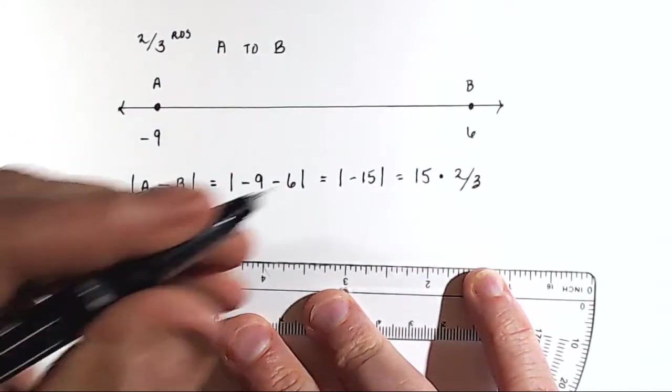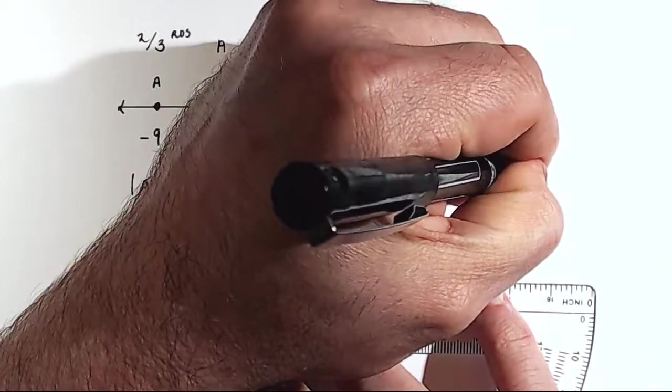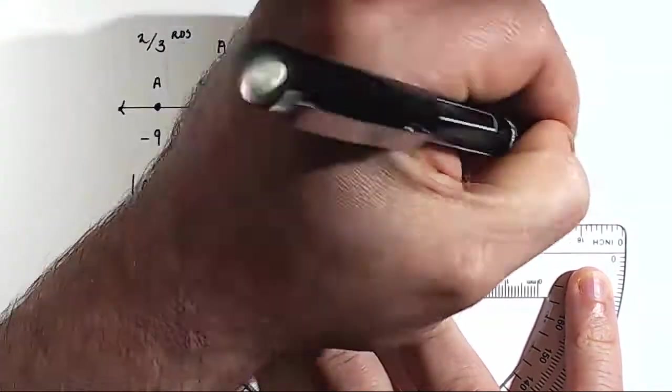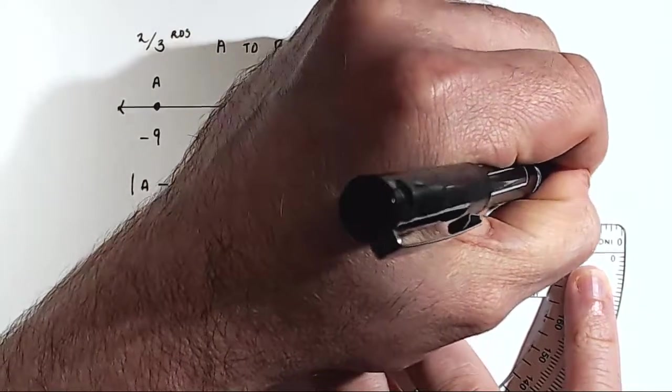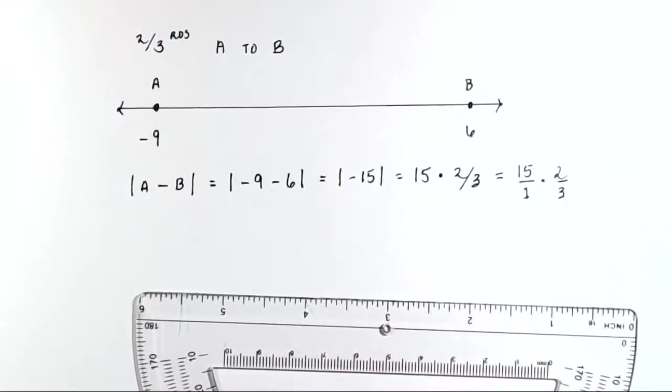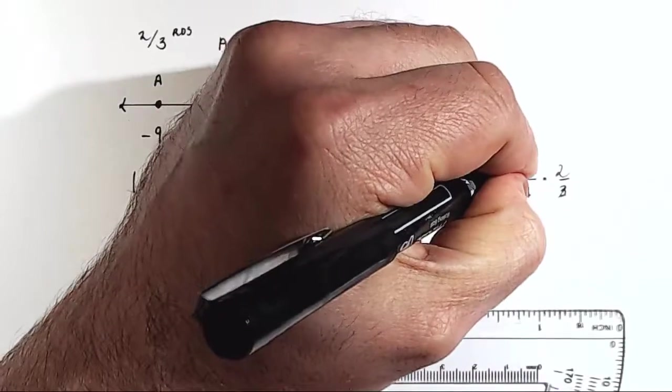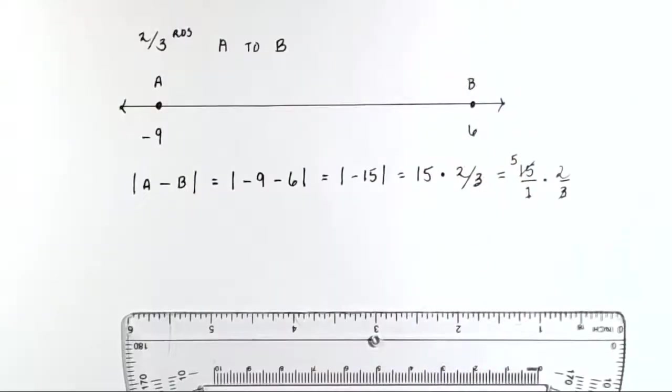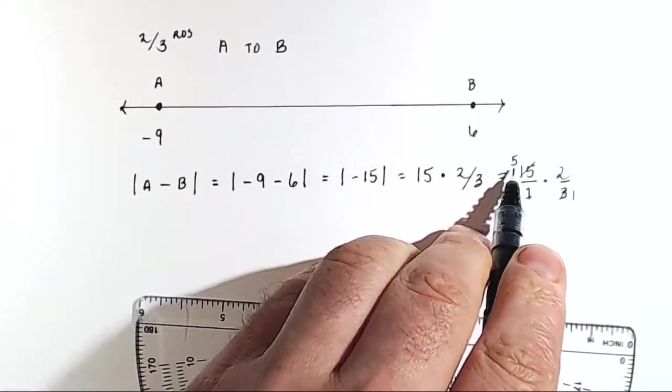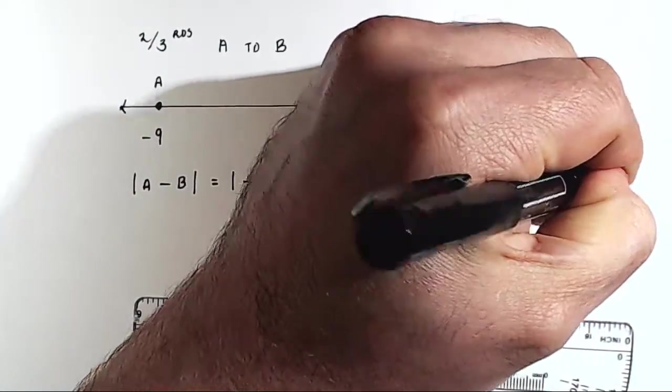And when we do that, that's basically like saying 15 over 1 times 2 over 3. And we can simplify this a little bit by dividing out a 3 in 15 and in 3, and then we just multiply 5 times 2, and that gives us 10.